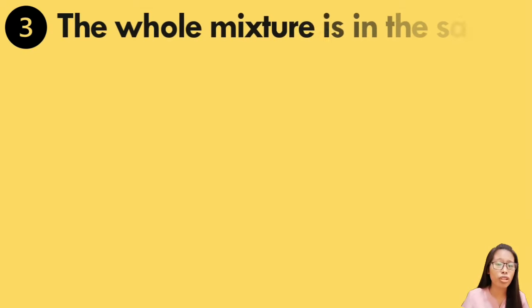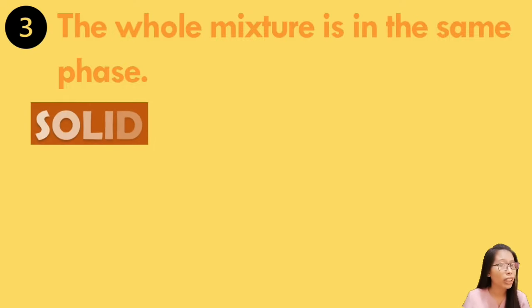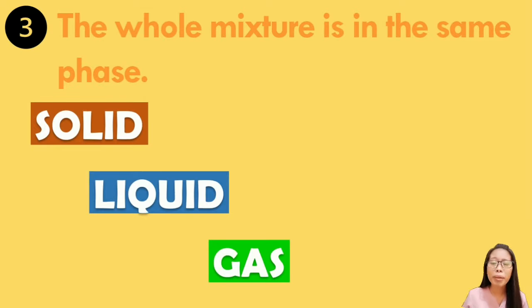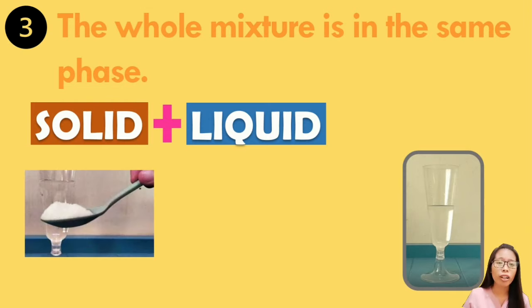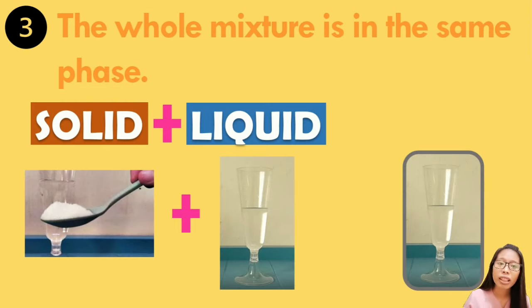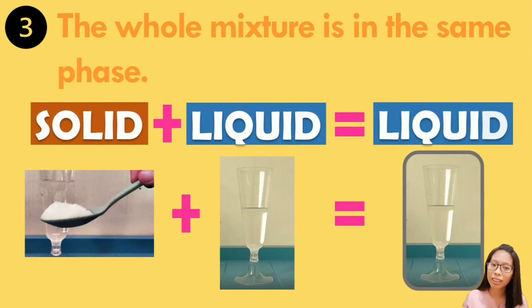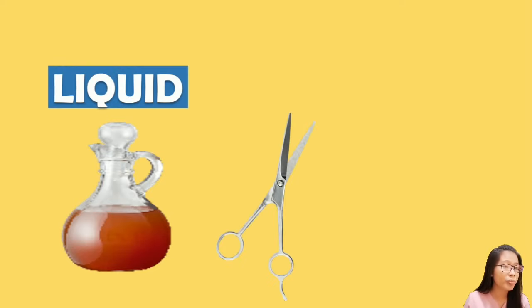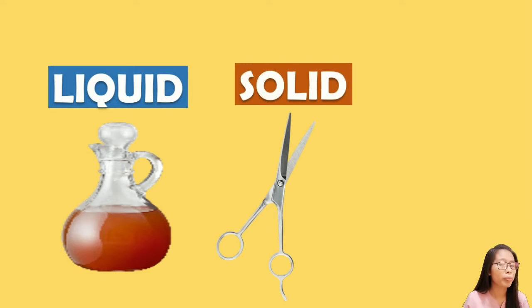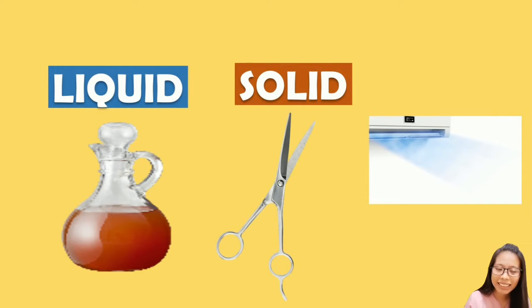The third characteristic of a homogeneous mixture is that the whole mixture is in the same phase. It may be a solid, a liquid, or a gas. We may mix a solid and a liquid substance, but the mixture should result in only one phase, like the sugar-water sample. Sugar is in a solid form while the water is in a liquid form, but when they are mixed together the mixture is only in a liquid form. Vinegar is in a liquid form. The Caesar is in a solid form. The air is in a gas form.